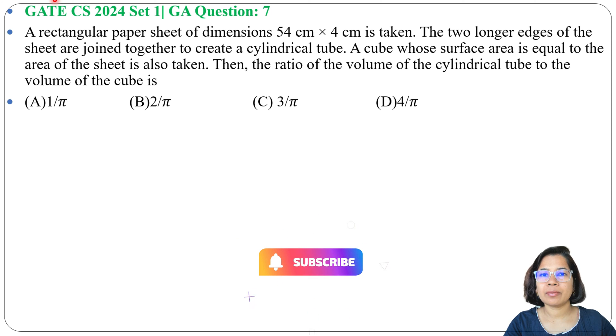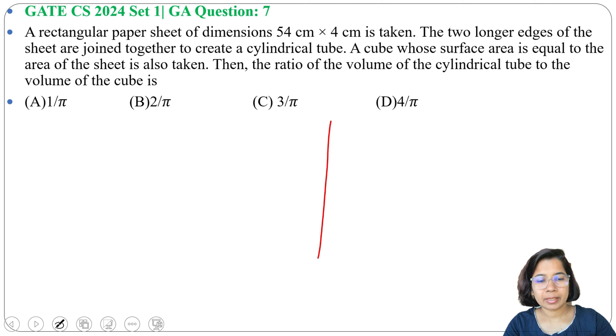Let's solve one previous question of general aptitude. This question was asked in GATE year 2024 set 1, GA Question number 7. A rectangular paper sheet of dimension 54 cm × 4 cm is taken. We have a rectangular sheet that's 54 × 4.